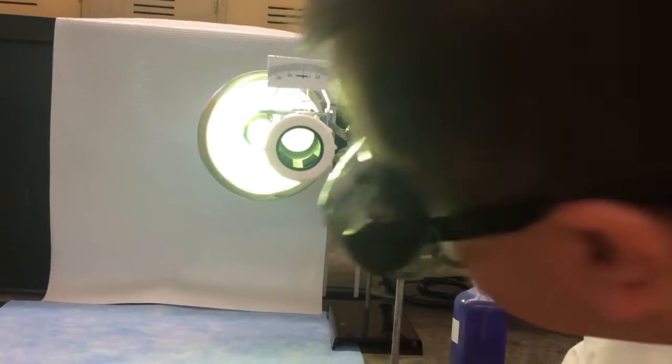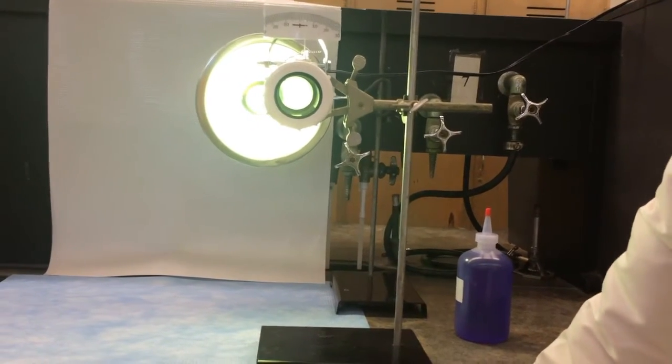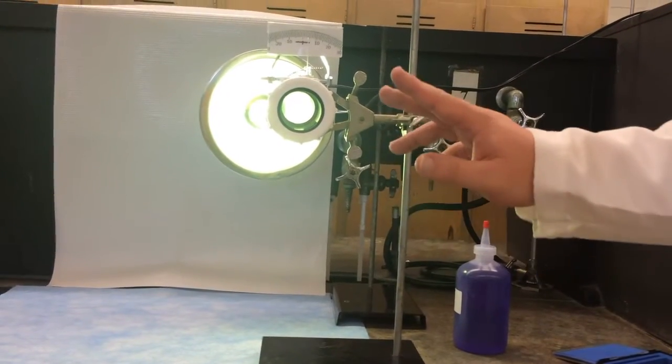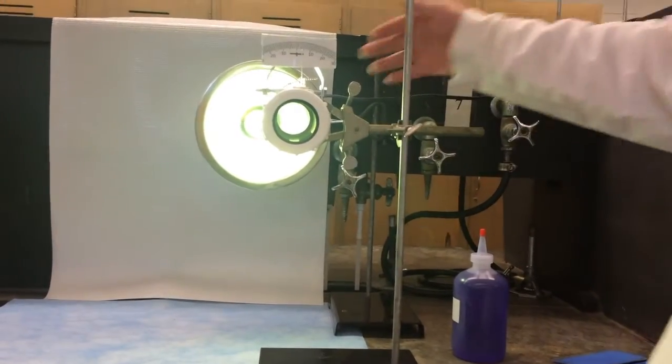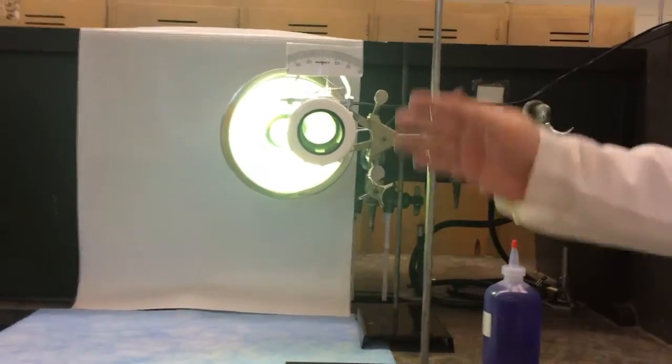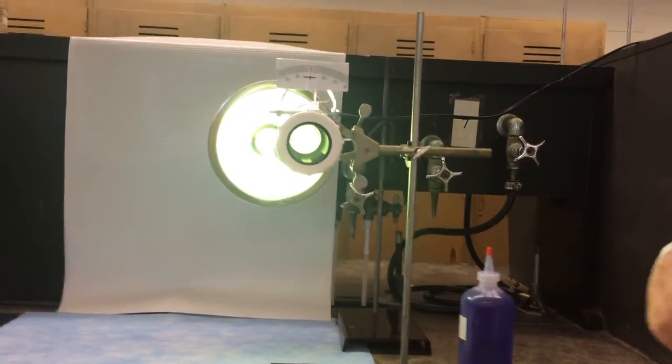And then if we look through the thing, you can see there's light going through it. Now what we need is to adjust the back piece here, the calibration, so that there's no light going through when the angle reads zero. That way the lenses are exactly the angle we want them to be.